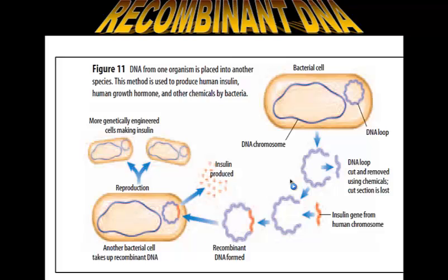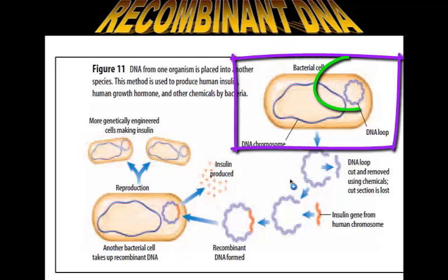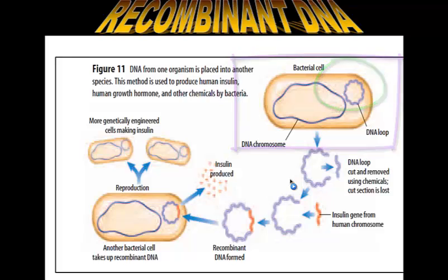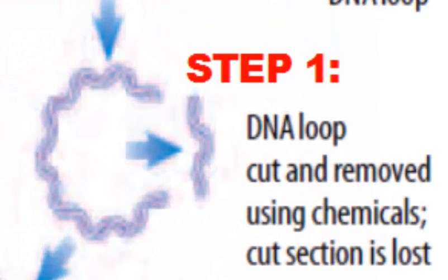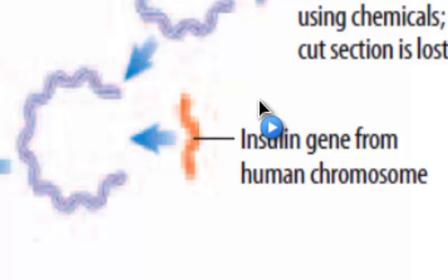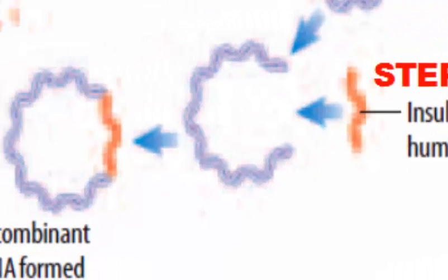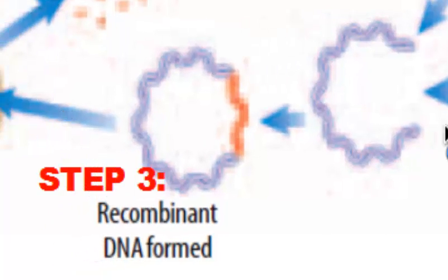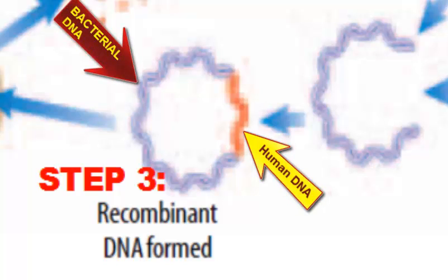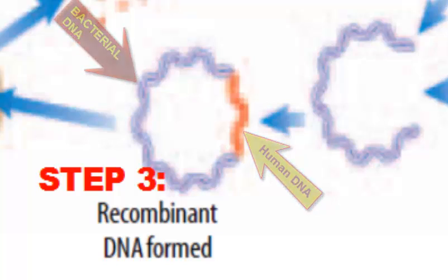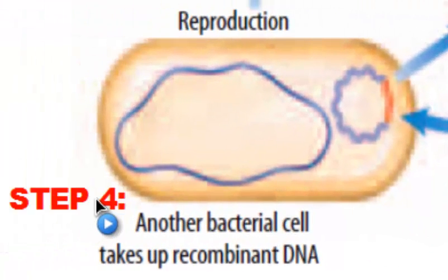Here we have our diagram on recombinant DNA. In the upper right-hand corner, we have our bacterial cell, and it has a DNA loop in addition to its DNA chromosome. What scientists do is take that DNA loop, extract it from the bacteria, and splice a section out of it. Once that section is cut out, the gap in the DNA loop now serves as an attachment site for the human insulin gene. So in step two, we take the human insulin gene and reattach it to the DNA loop. In step three, we've now recombined the human DNA with bacterial DNA — that's what recombinant means. In step four, another bacteria cell takes up that new DNA loop containing the human insulin gene.